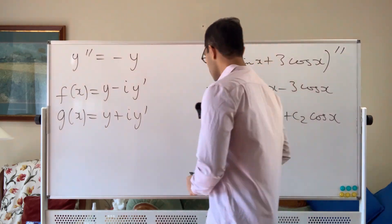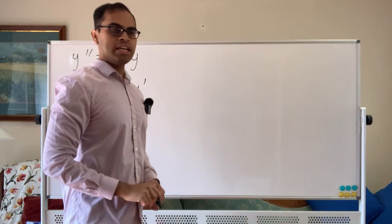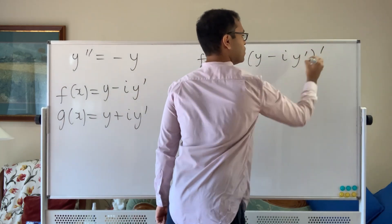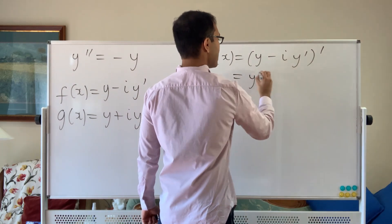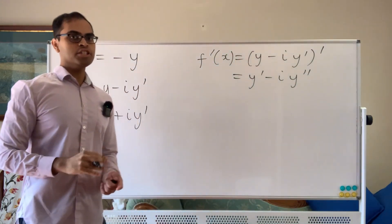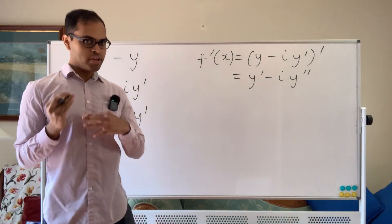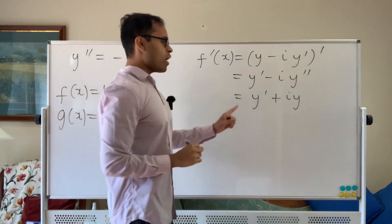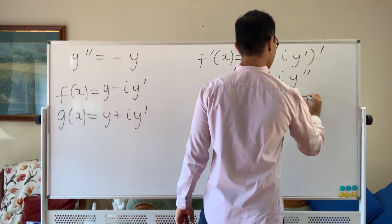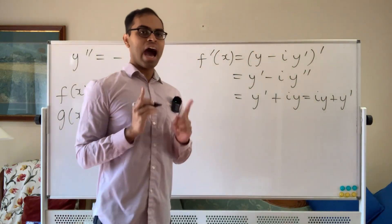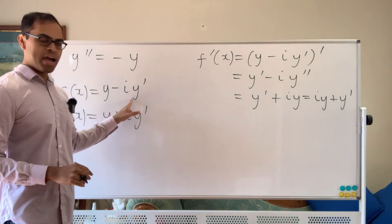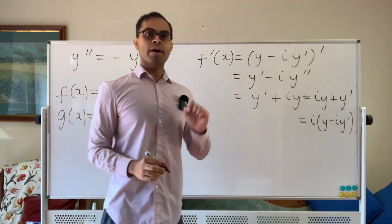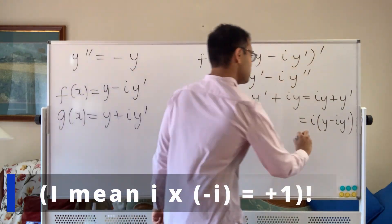Why are we constructing these? Let's differentiate and find out. If we differentiate f, we get f prime of x equals the derivative of y minus i times y prime, which gives y prime minus i times y double prime. But since our original function satisfies y double prime equals minus y, this becomes y prime plus i times y, which we can write as i times y plus y prime. This is actually i times f of x, because f of x is y minus i times y prime, and multiplying by i gives i times y minus i squared times y prime, and since i squared equals minus 1, this checks out.